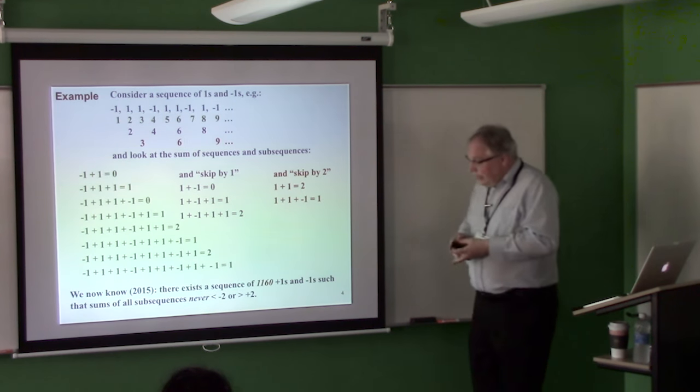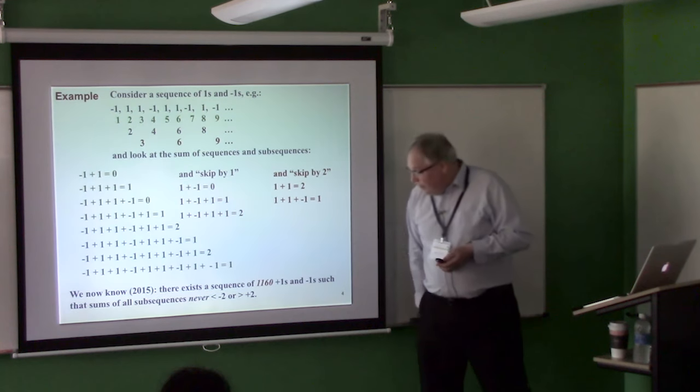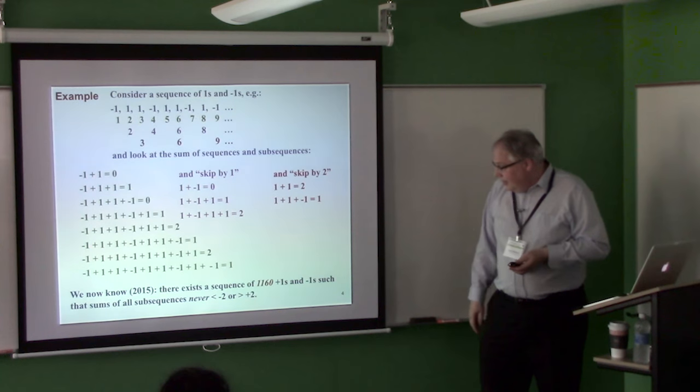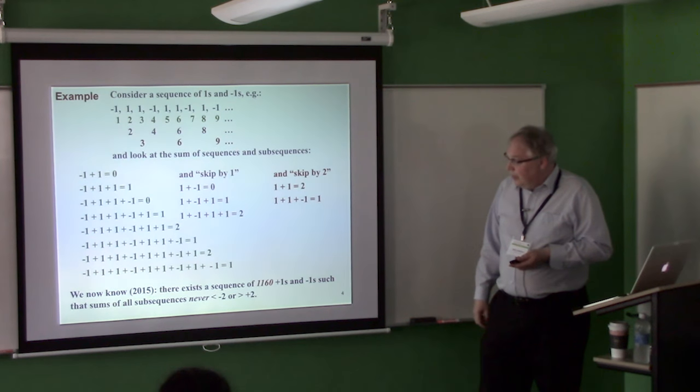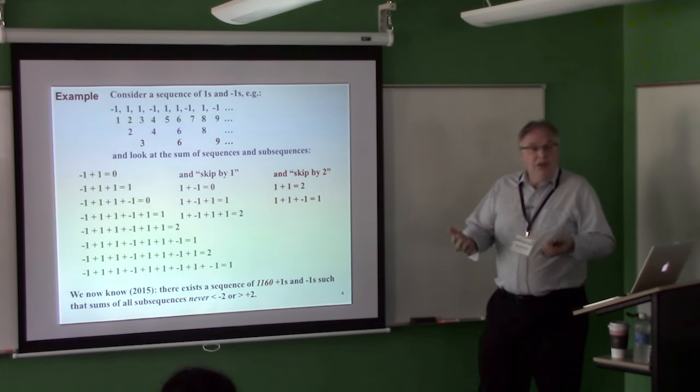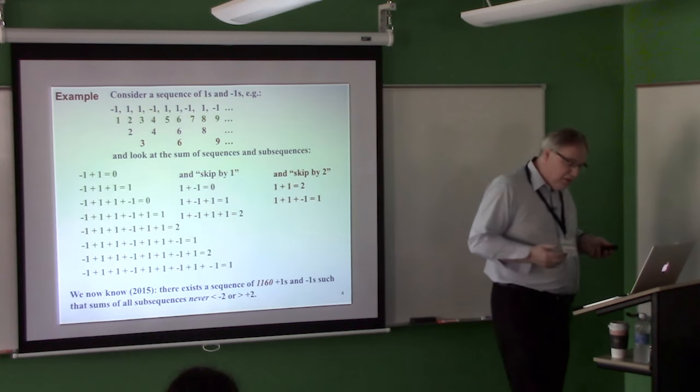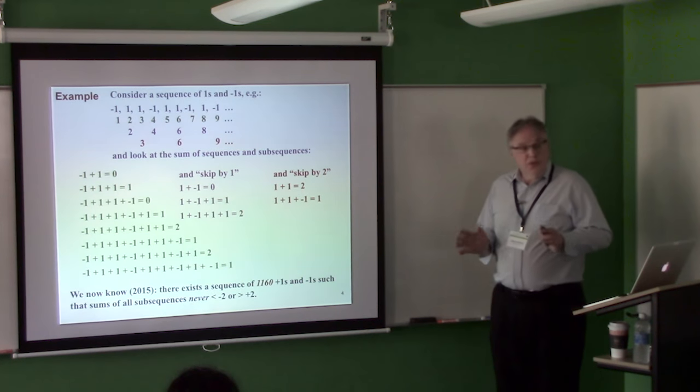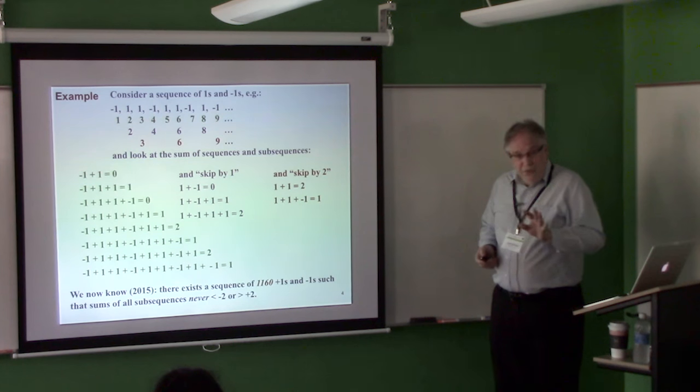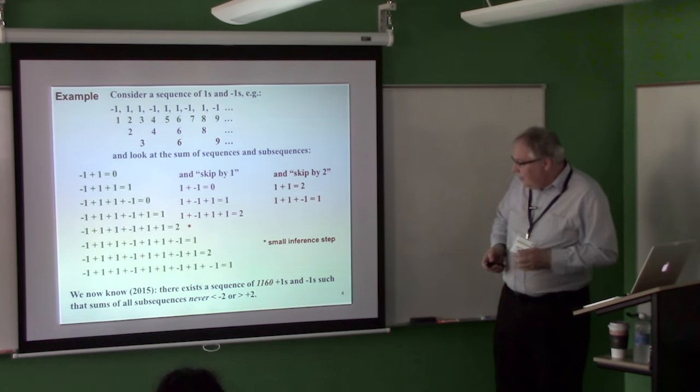And this is one of these reasoning results. So in 2015, it was shown that there exists a sequence of 1160 plus ones and minus ones, such that the sum of all the subsequences is between minus two and plus two. Now, if you start to think about this as a search problem, you know, how many sequences are there? Two to the 1160, that is about 10 to the 350. So there are quite a few. So you have to, so there's no hope for enumeration or anything.